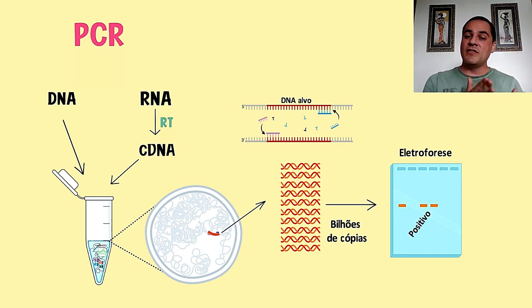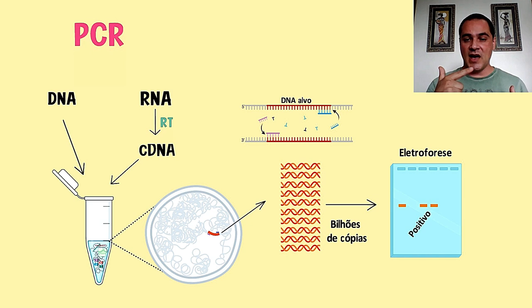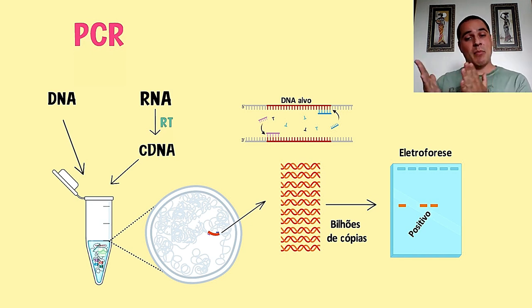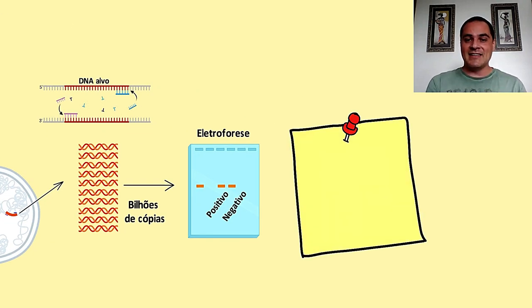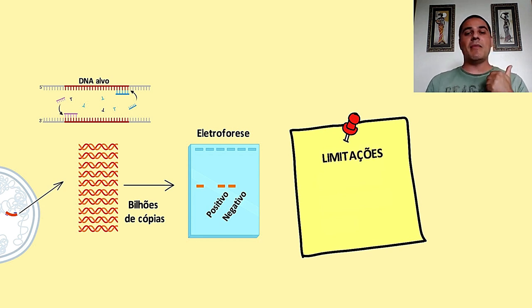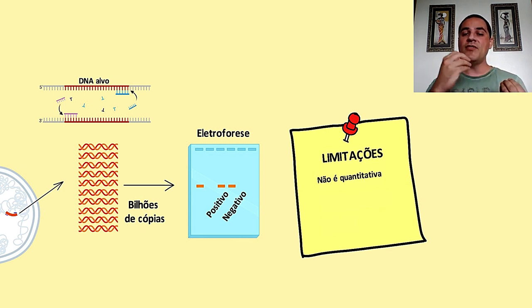Caso o DNA alvo não esteja presente, os primers não vão encontrar o DNA alvo, não vai ter amplificação, não vai ter aparecimento de banda no gel, e esse resultado é chamado de negativo. Só que essa técnica de PCR clássica tem algumas limitações. Primeiro, que ela não é uma técnica quantitativa — a gente não consegue saber quanto de DNA foi amplificado nessa reação.